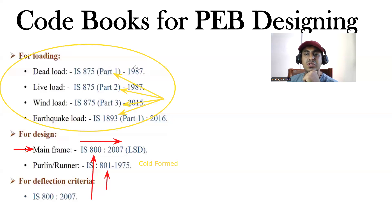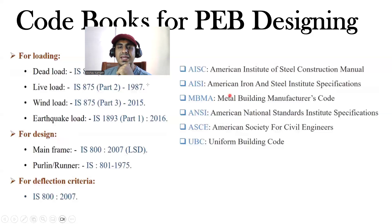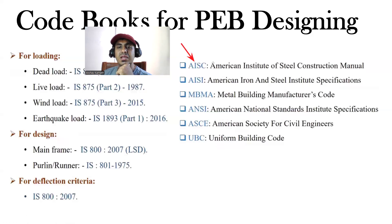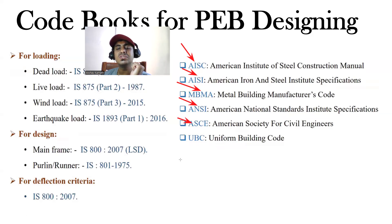Apart from Indian codes, there are international code books. AISC stands for American Institute of Steel Construction Manual. AISI is the American Iron and Steel Institute specification. MB is the Metal Building Manufacturers code. ANSI is the American National Standards Institute specification, and ASCE is the American Society for Civil Engineers. UBC is the Uniform Building Code.